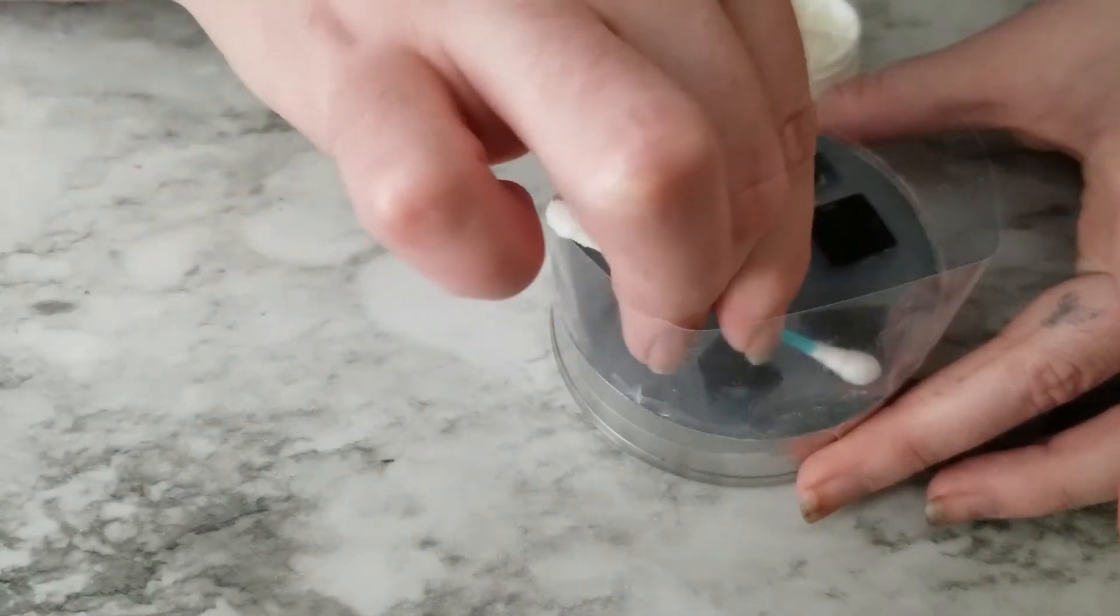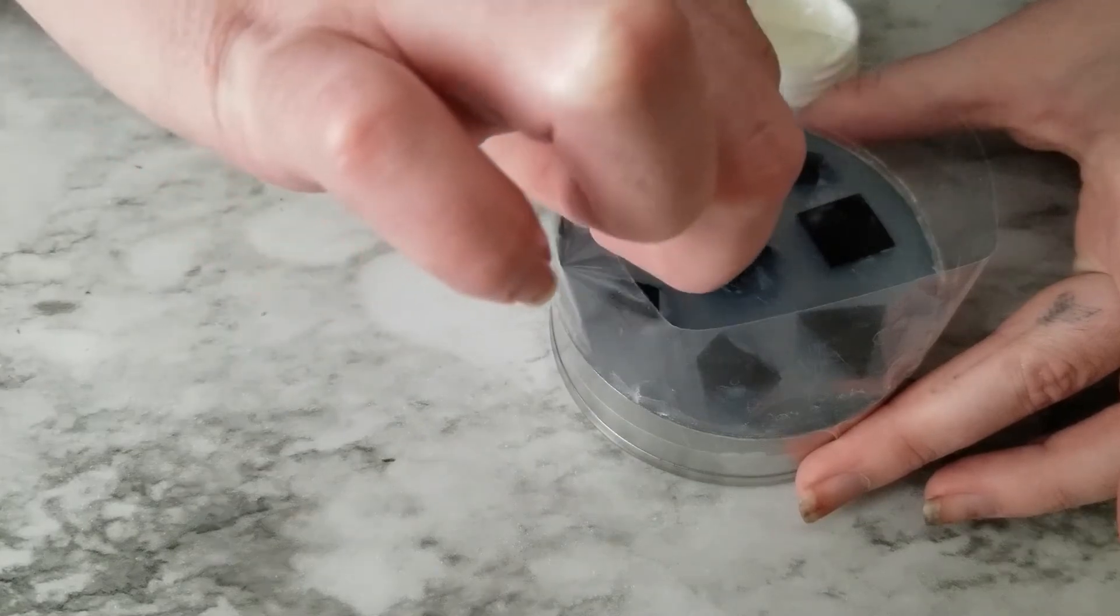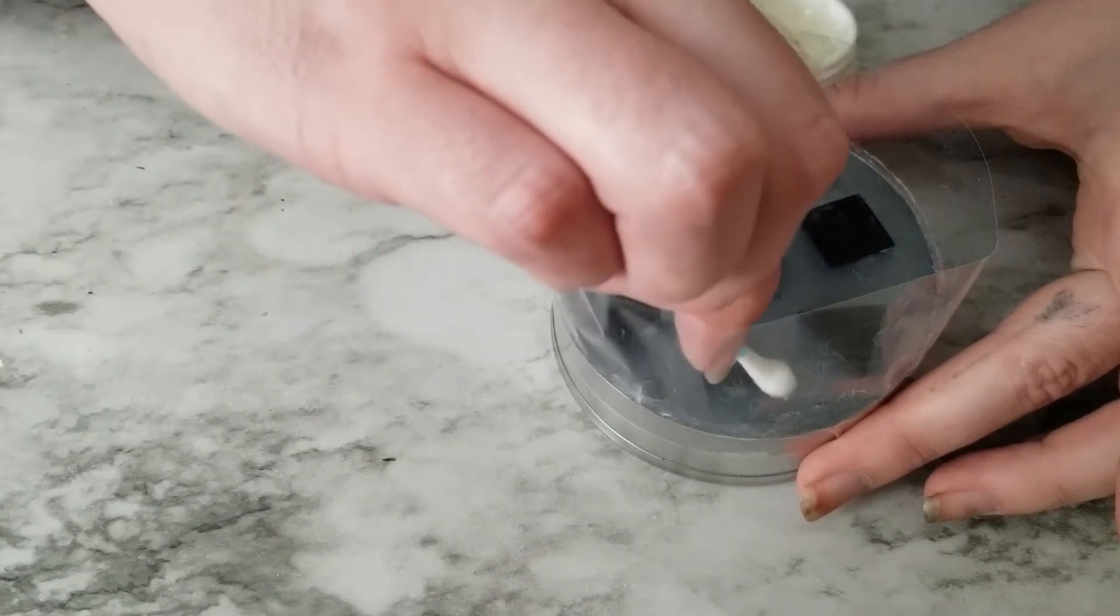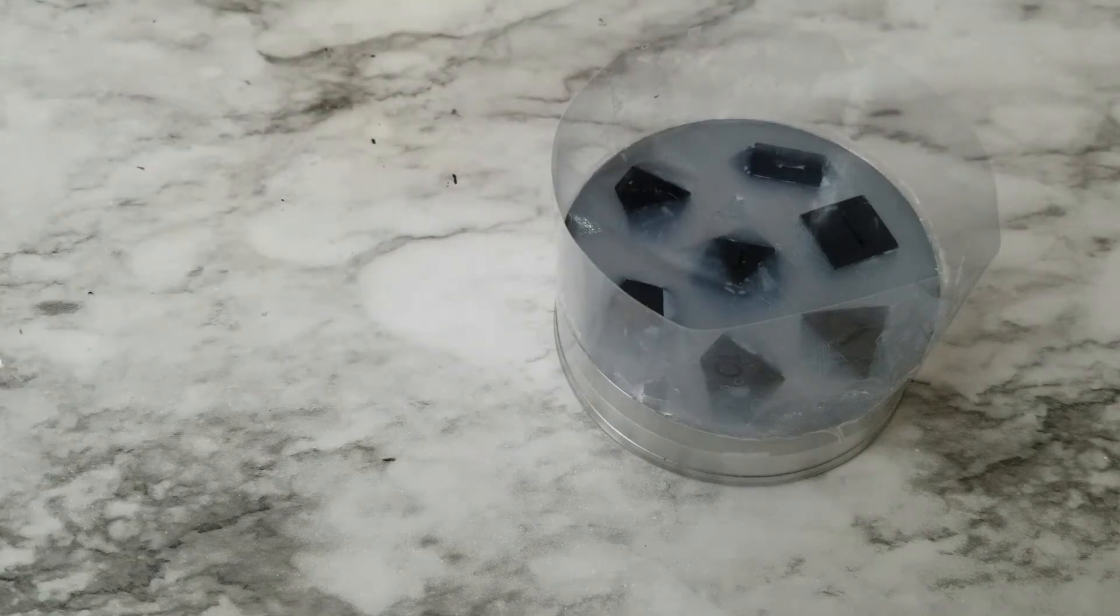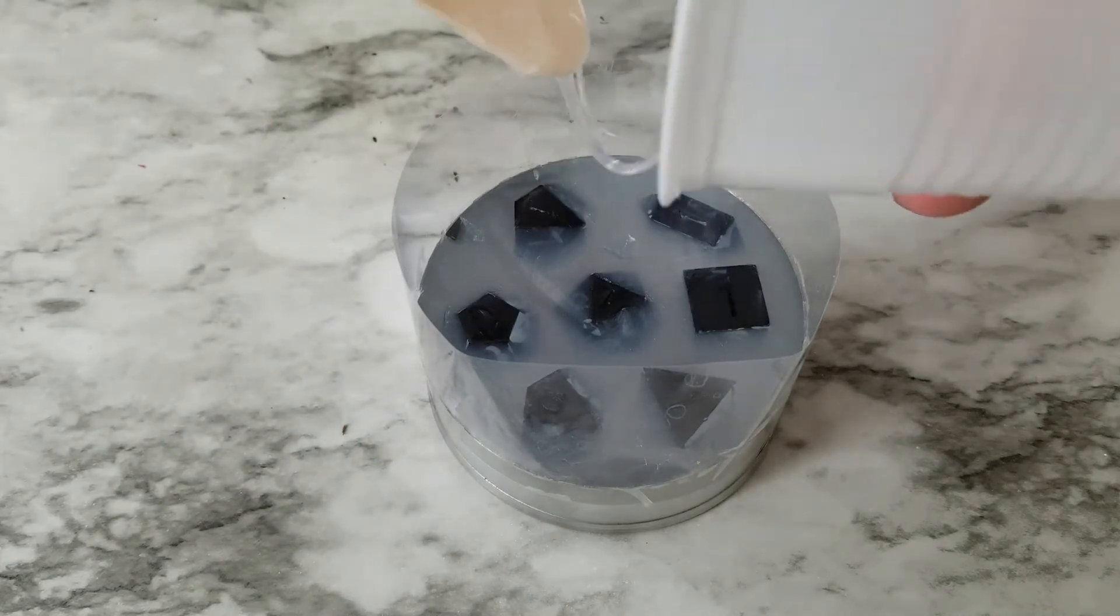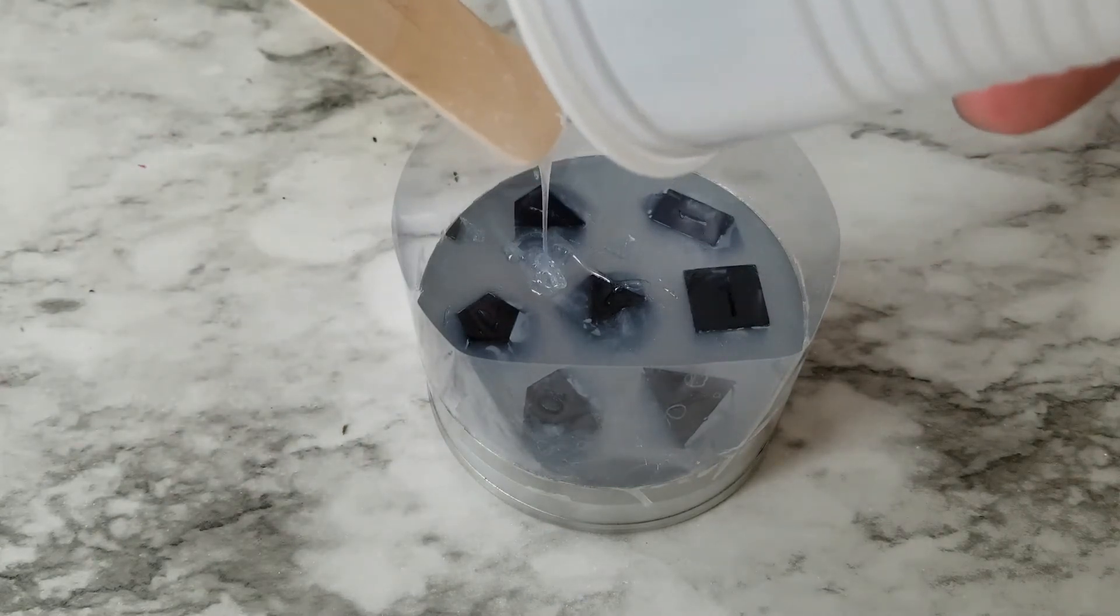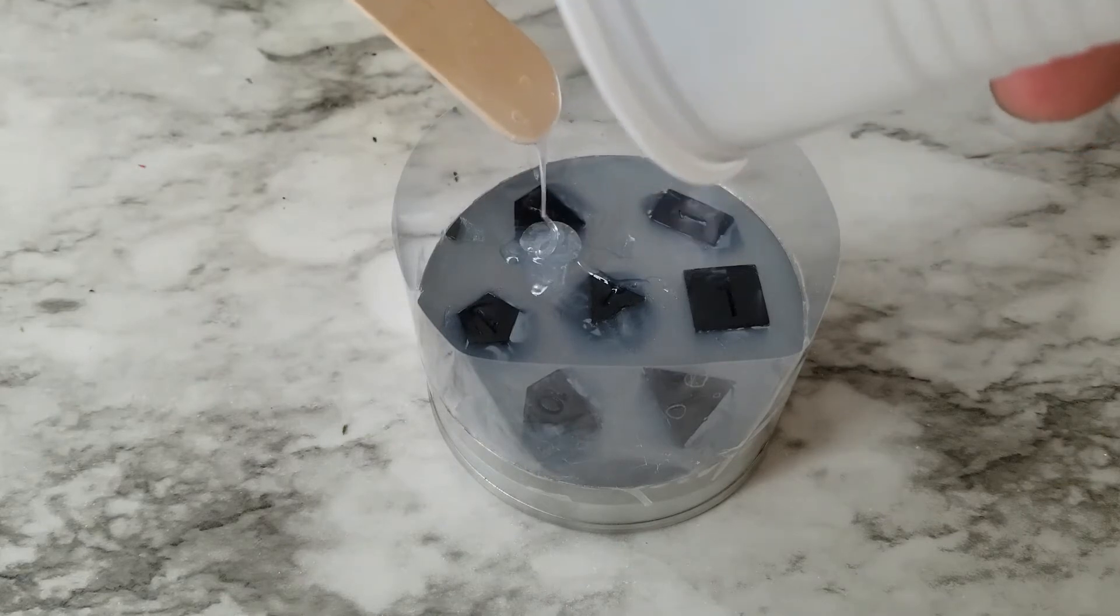When I don't have enough of the petroleum jelly up there, they stick and then they rip when I'm trying to demold my masters. So make sure you have plenty of that up there. It's always better to be generous than to not put enough.